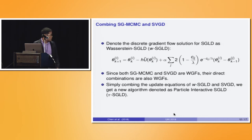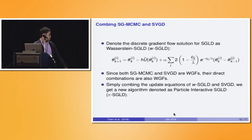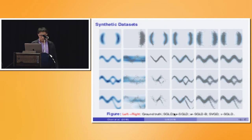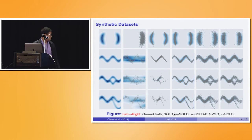Since SGMCMC and SVGD are both Wasserstein gradient flows, we can combine their update equations to form a new algorithm, which we call particle-interactive SGLD, or pi-SGLD. We now show some experimental results. The first row shows the ground-truth distributions.